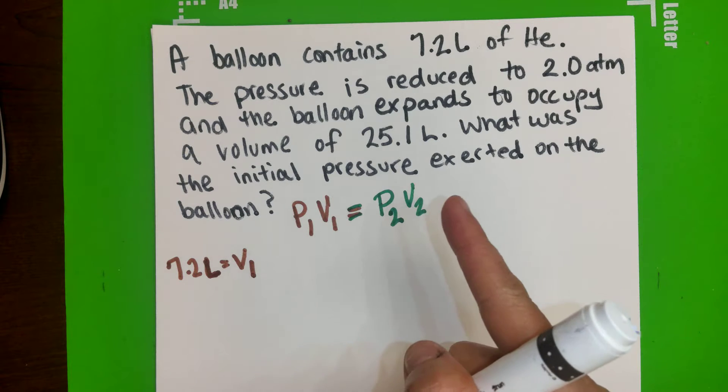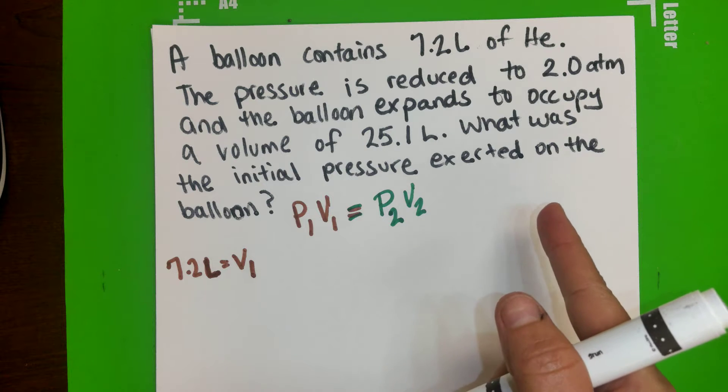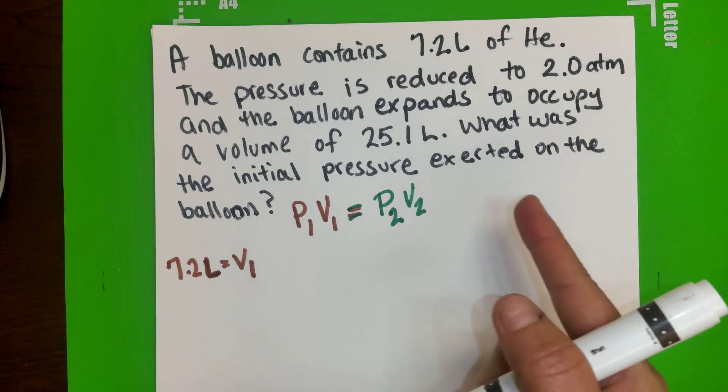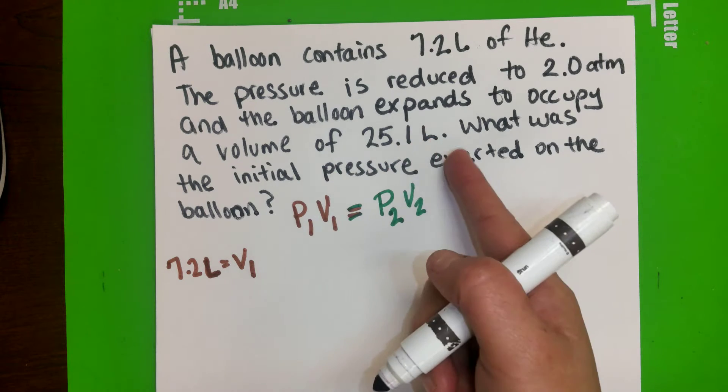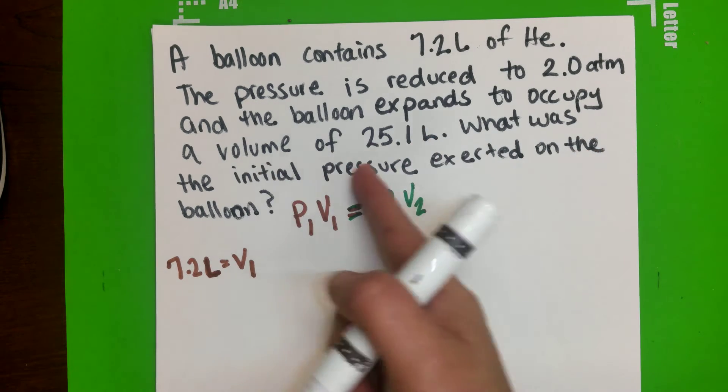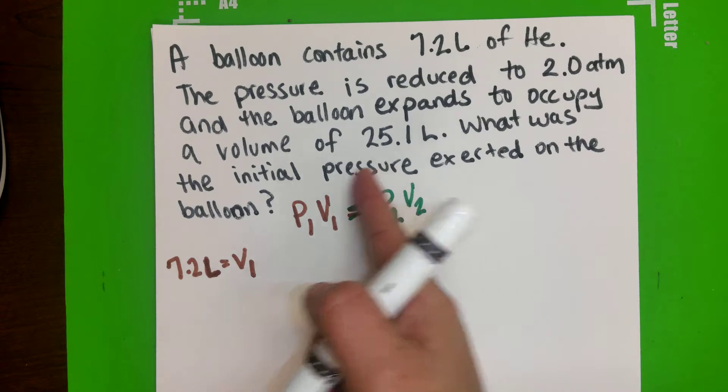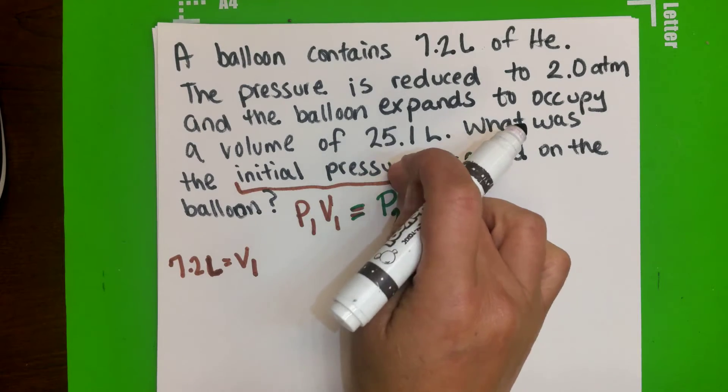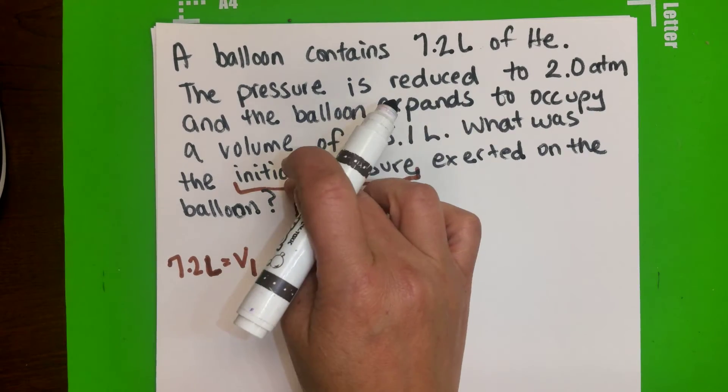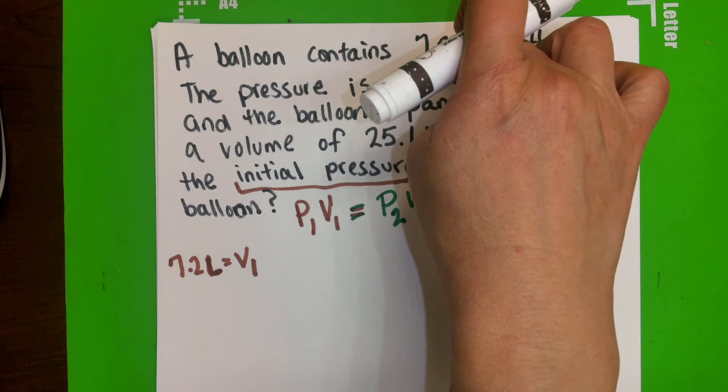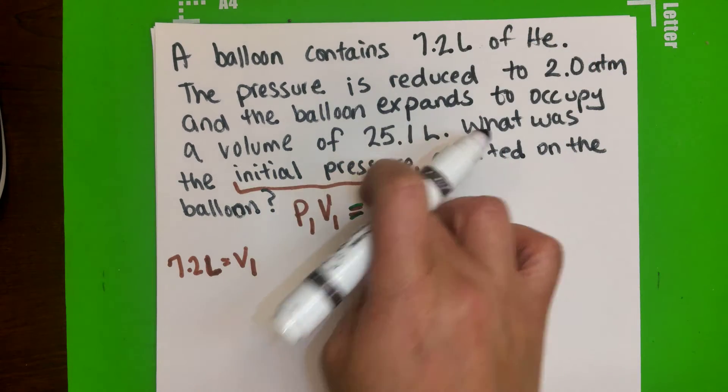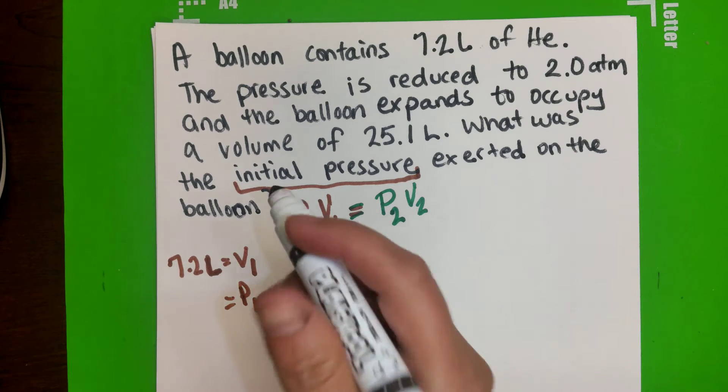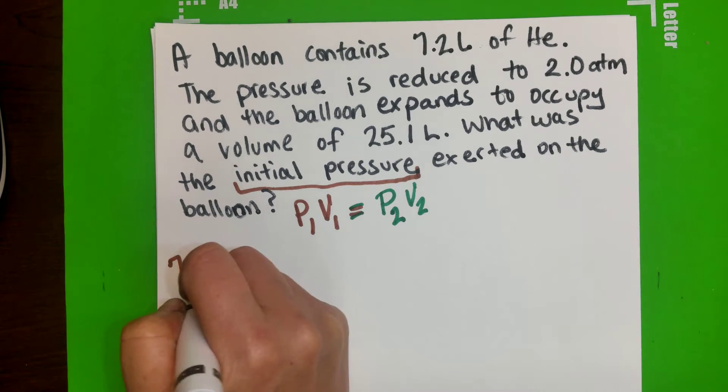Now the pressure is reduced to 2.0 ATM, and the balloon expands to occupy the volume of 25.1 liters. What was the initial pressure? So right off the bat, you're trying to solve for the initial pressure of this 7.2 liters. So the pressure, P1, is the one we're trying to solve, so that will be your question mark.